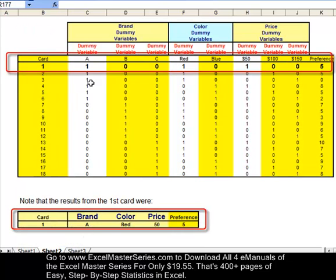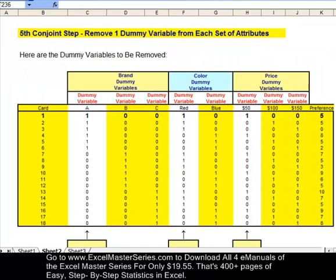Here's how the consumer's data gets translated into dummy variable data. In card one, dummy variables for brand A, color red, and price $50 got one as a value for the dummy variables. All other dummy variables received the value of zero, and the preference is five. And that's card one.